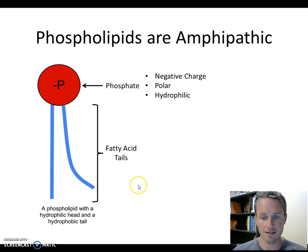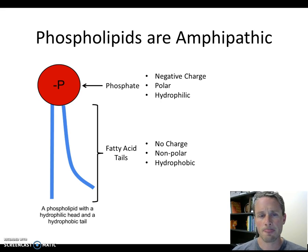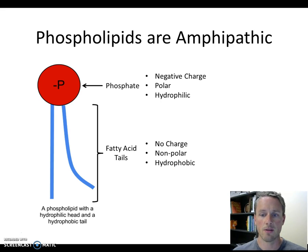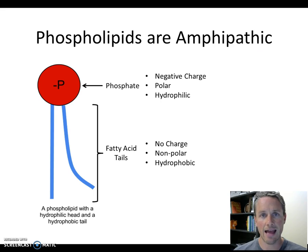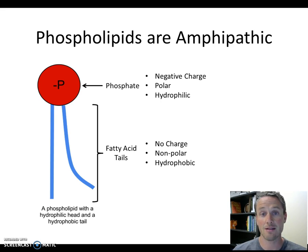How about the bottom? The bottom has the fatty acid tails. Those don't have any charge — they're made primarily of just carbon and hydrogen, all non-charged, non-polar molecules. So we can call them hydrophobic. When molecules do not have a charge, they don't like to interact with water, so we call them hydrophobic. So a phospholipid molecule has a hydrophilic phosphate head group and hydrophobic fatty acid tails. Any molecule that has both hydrophobic and hydrophilic parts we call amphipathic, and it's this amphipathic nature of phospholipids that gives them the behavior that makes them so useful in cells.